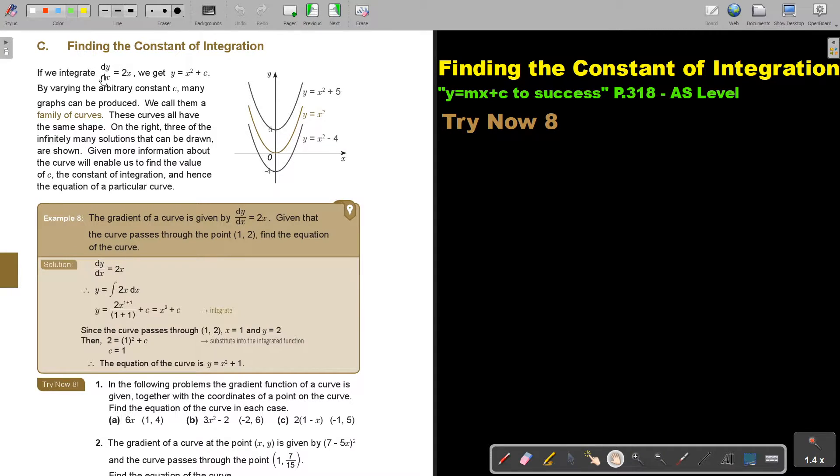If we integrate dy by dx equals 2x, we will get it's 2 plus 1, so it will be 1 plus 2, divide by 2, so I will get x squared plus that c.